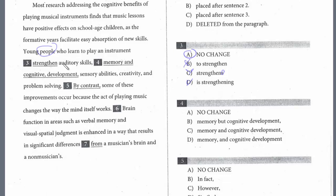Now we're listing the different mental benefits that these young people strengthen by playing an instrument. We have 'auditory skills' — that's one. Then 'memory and cognitive... and then development.' This really doesn't fit. They strengthen 'memory and cognitive what?' Right? 'Cognitive' is an adjective — it should be 'cognitive development.' If you look at the choices, it's not 'memory but' — there's no contrast. 'Memory and cognitive' — these are both adjectives — they need to modify 'development.' So the answer for this one is C, and we're not going to split these up with a comma either.